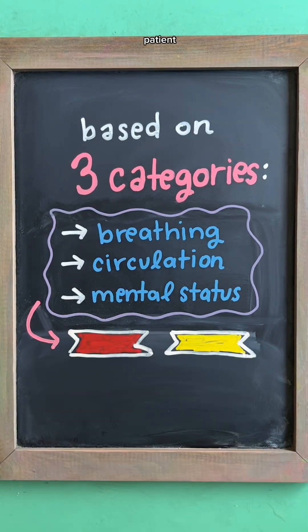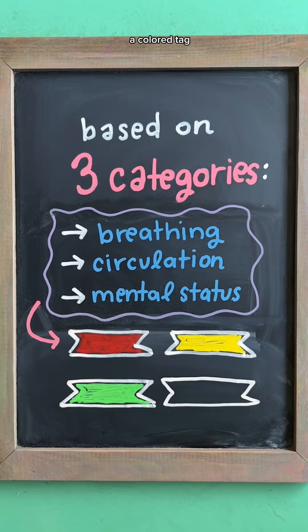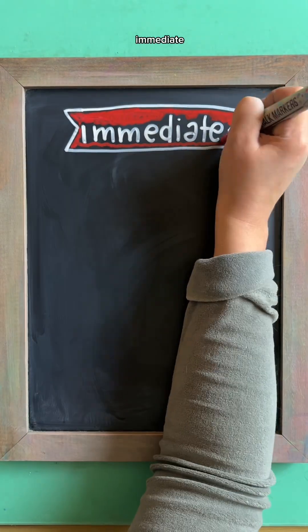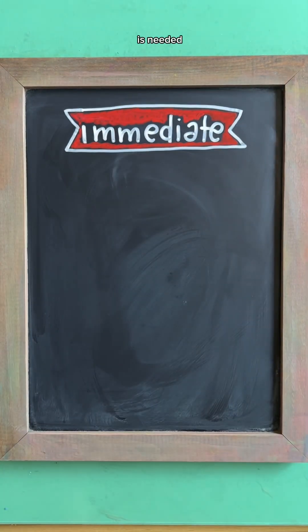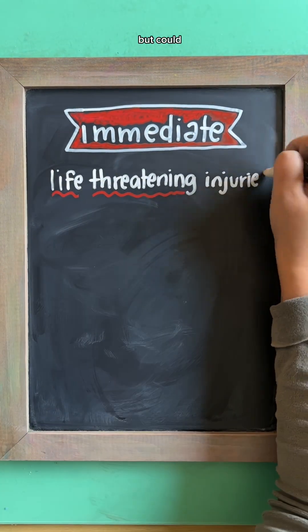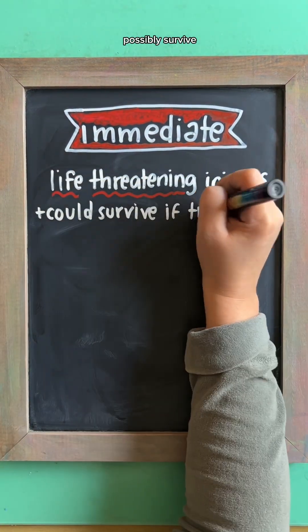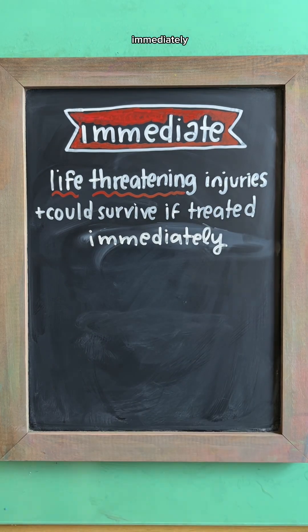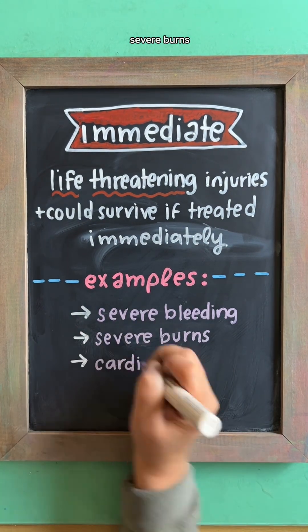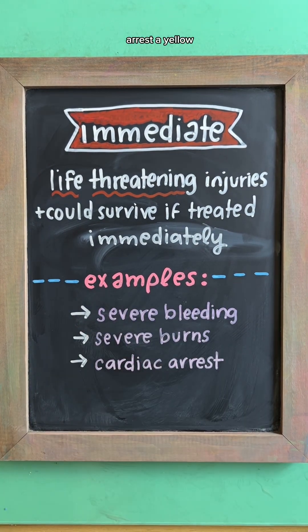Based on these assessments, each patient is given a colored tag. A red tag indicates immediate treatment is needed. This is for injuries that are life-threatening but could possibly survive if treated immediately, such as severe bleeding, severe burns, or cardiac arrest.